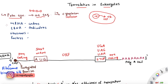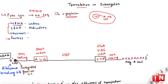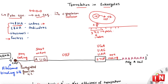Translation requires three main machinery components and different factors — initiation factors, elongation factors, and release factors — that come at different stages. The first component is mRNA, which has all the information in the form of codons. A codon is a group of three nucleotides that gives us one amino acid.